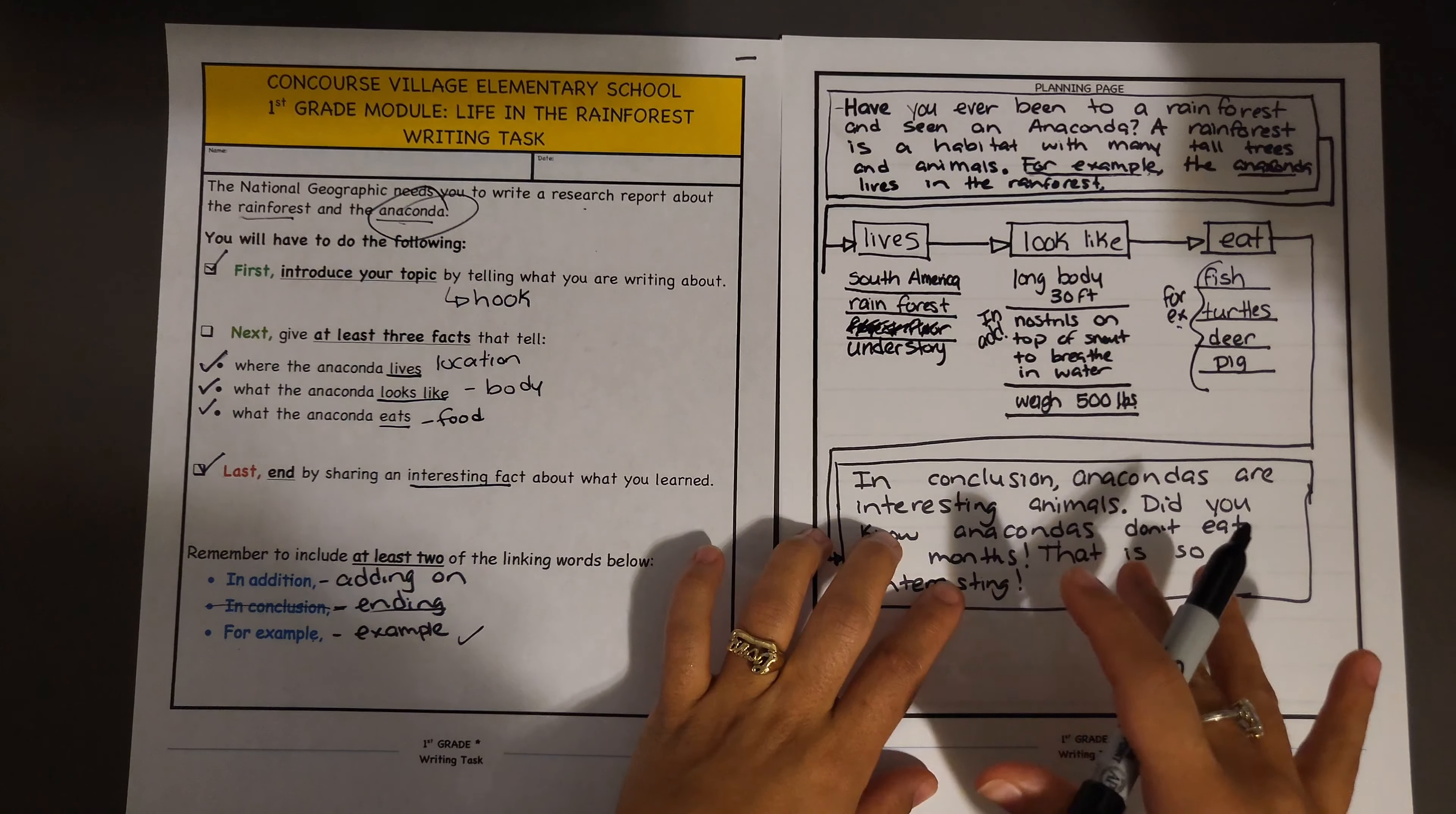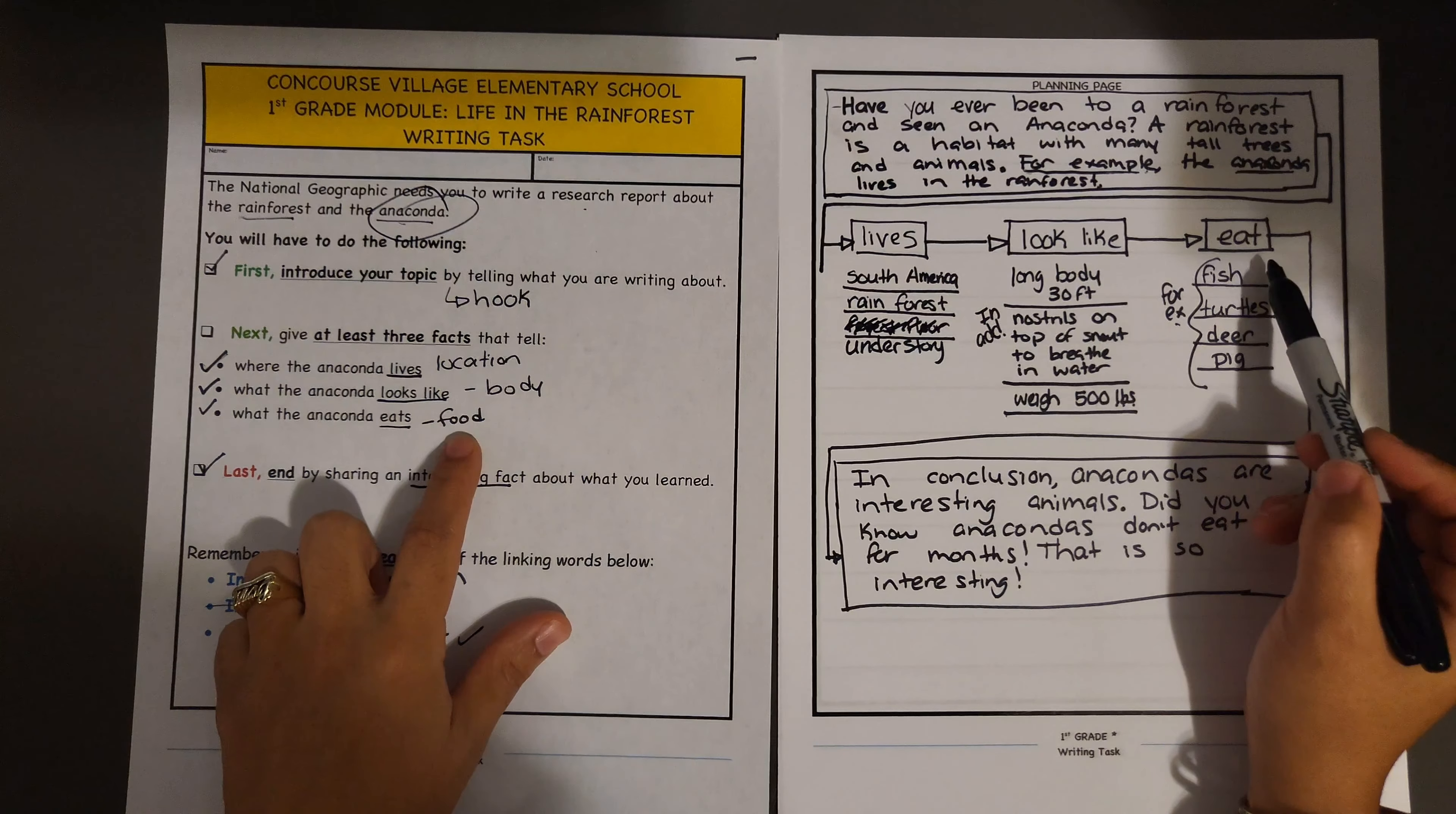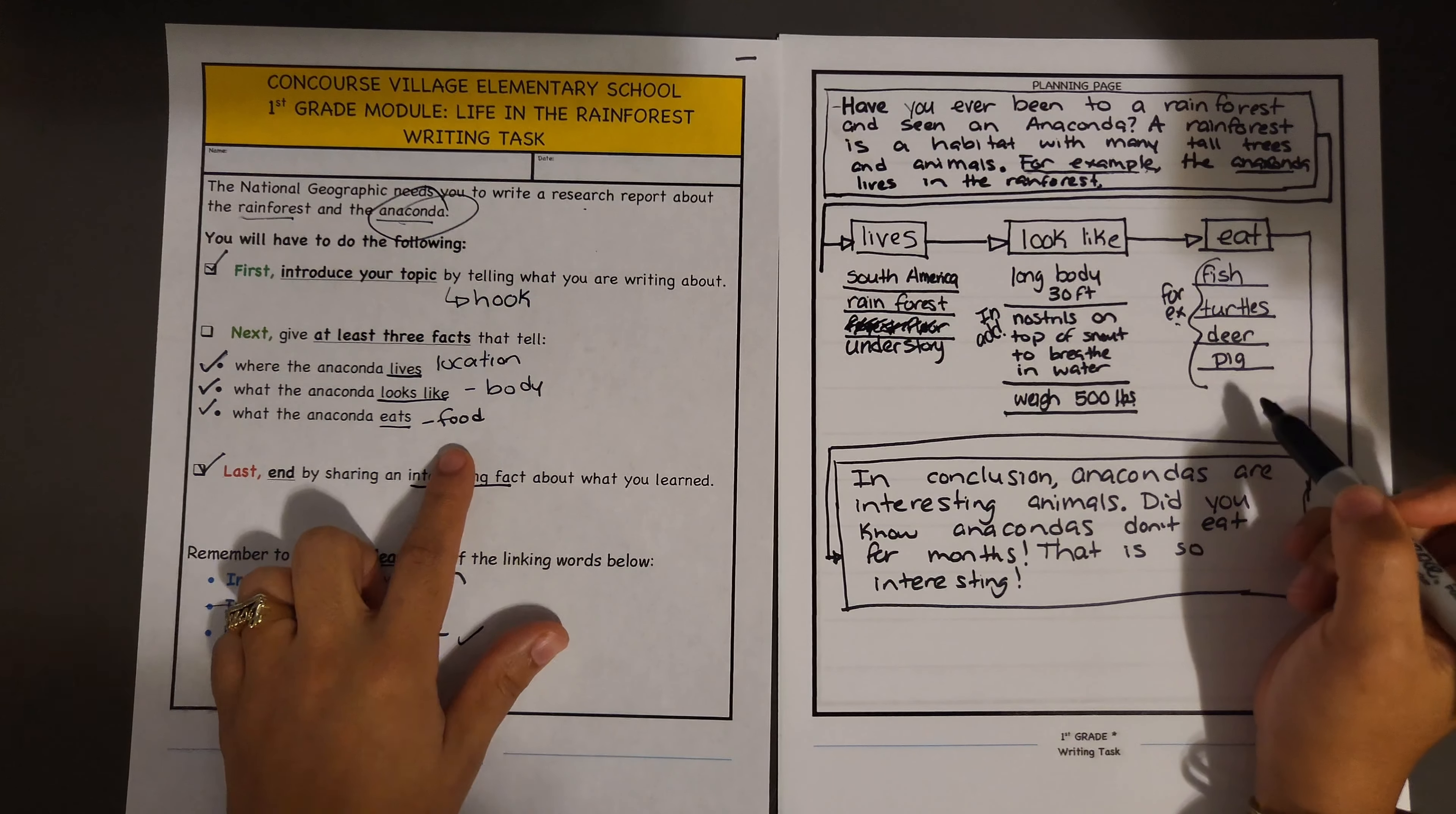What does it look like? It has a long body, 30 feet long, in addition nostrils on top of the snout to breathe in water, and it weighs 500 pounds. What it eats: many different types of animals, for example fish, turtles, deer, and pigs.